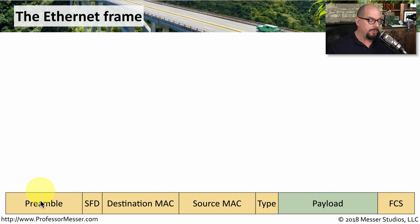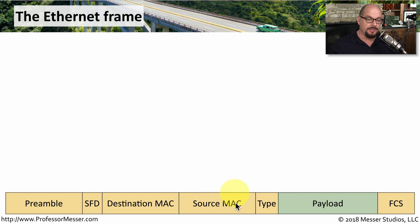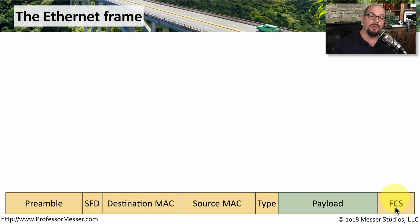We start with a preamble, and then there's a start frame delimiter. Then there is a destination MAC address — that's where this particular frame is destined to. We also have inside this frame the source MAC address, or the original device that was sending this data across the network. There's a type field, the payload itself — whatever we're sending across to that destination device — and finally an FCS, or frame check sequence, that examines everything that was sent across the network.